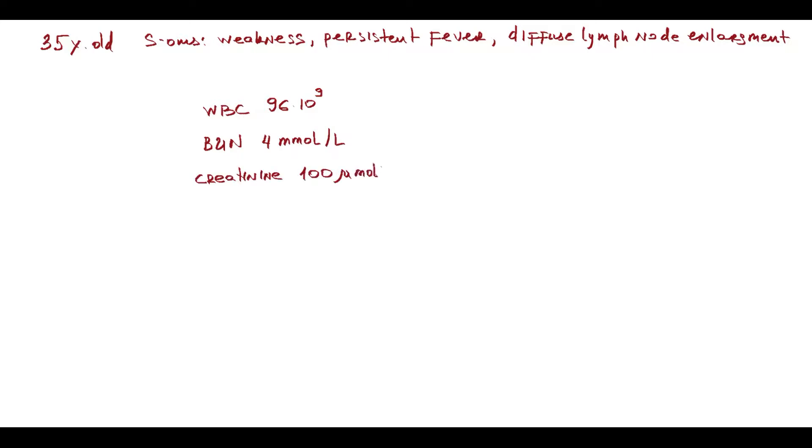As an example, a 35-year-old male is hospitalized with symptoms of weakness, persistent fever, and diffuse lymph node enlargement. Lab results show significant leukocytosis at 96,000 with circulating lymphoblasts. Blood urea nitrogen, creatinine, and uric acid are normal.